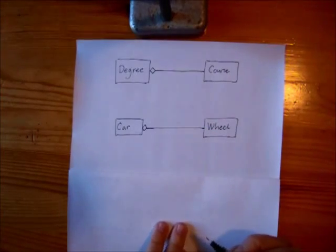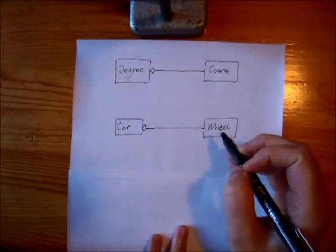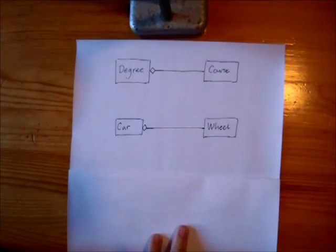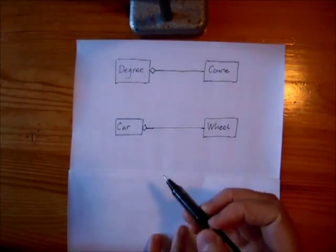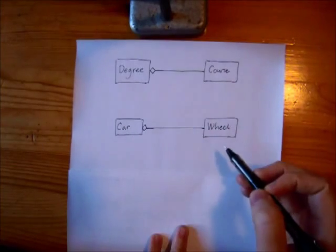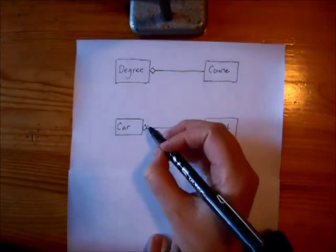But this is a stronger relationship. It doesn't make sense for a wheel to be simultaneously part of more than one car object. And if you destroyed the car, you would also destroy its wheels.